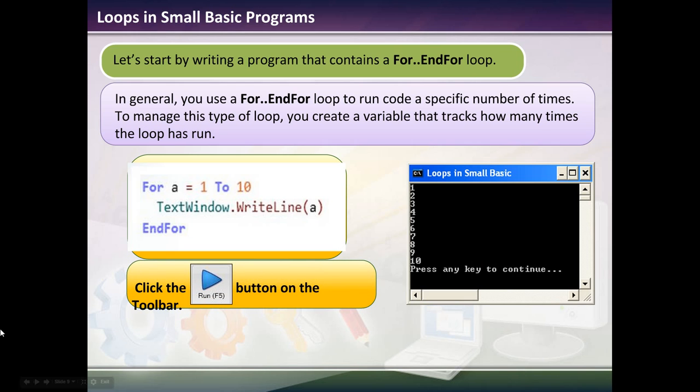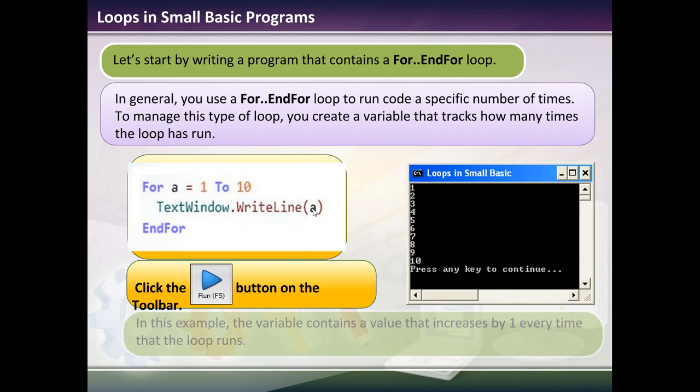What that means is it'll print 1, because the first time it comes through, it starts at 1. Then it prints 1. Then at endfor, it's not at 10 yet, so it loops back. But now it's no longer 1, it's 2. It's not at the end yet. Loops back around. Now a equals 3, 4, 5, 6. And what it does is it prints 1 through 10. I could go in and say text window.writeline 1, text window.writeline 2, text window.writeline 3. Or if I'm going to do some sort of sequence like this, I could just make a for-endfor loop. In this example, the variable contains a value that increases by 1 every time the loop runs.